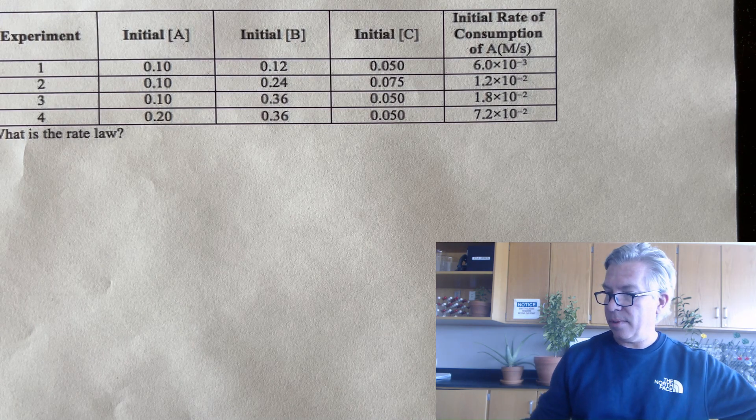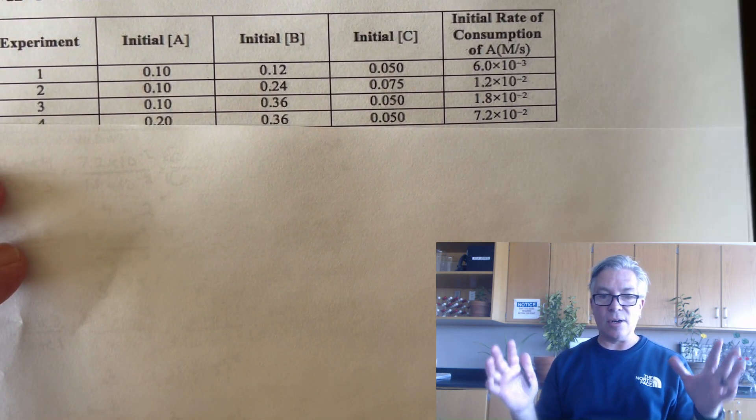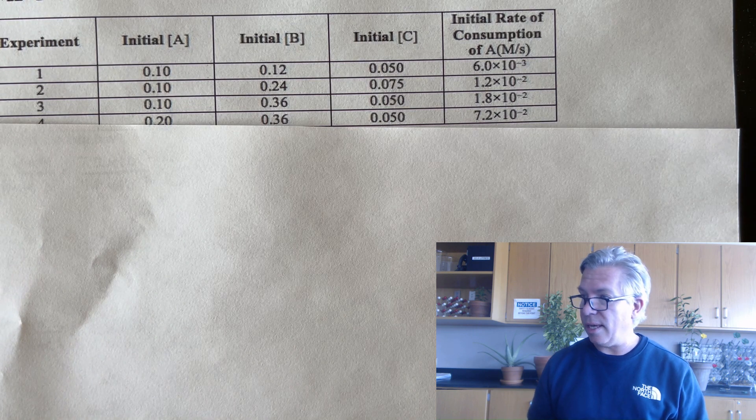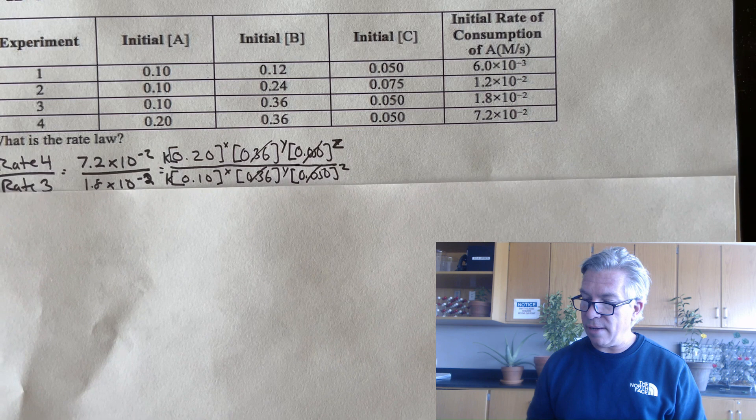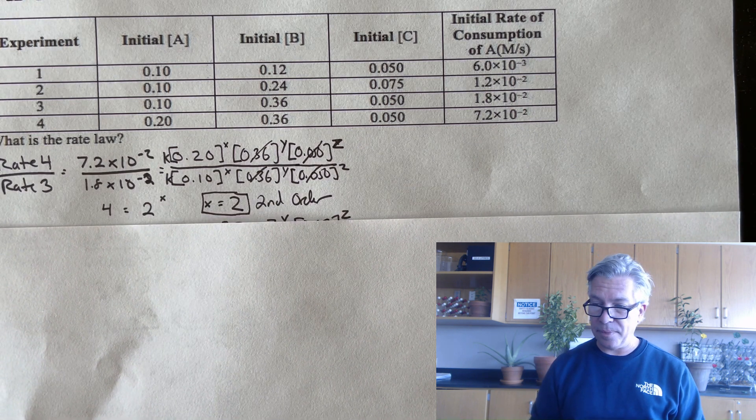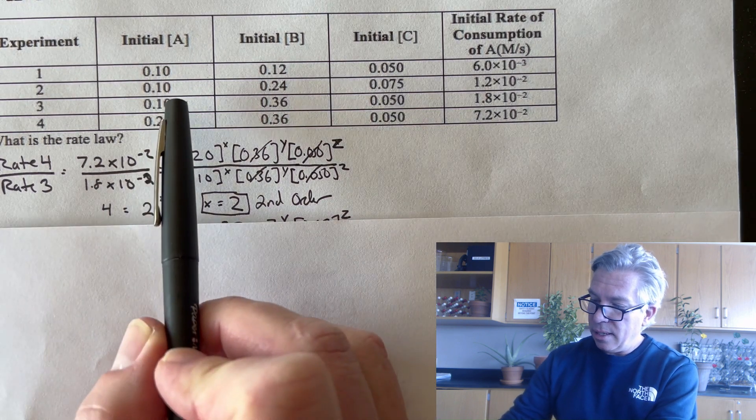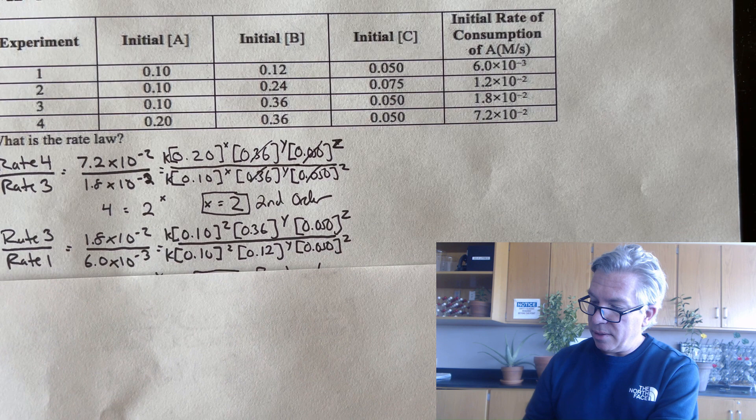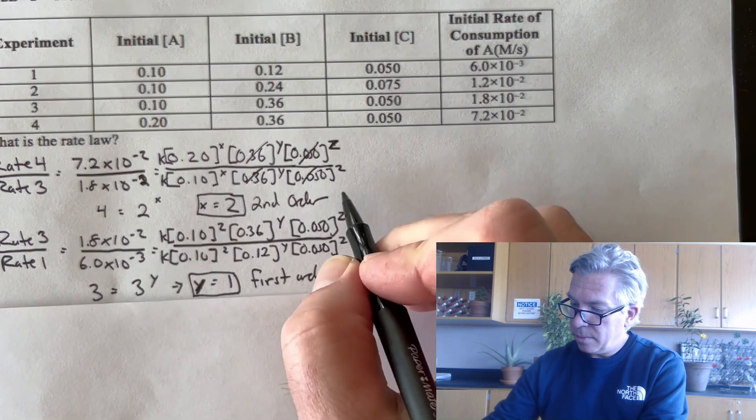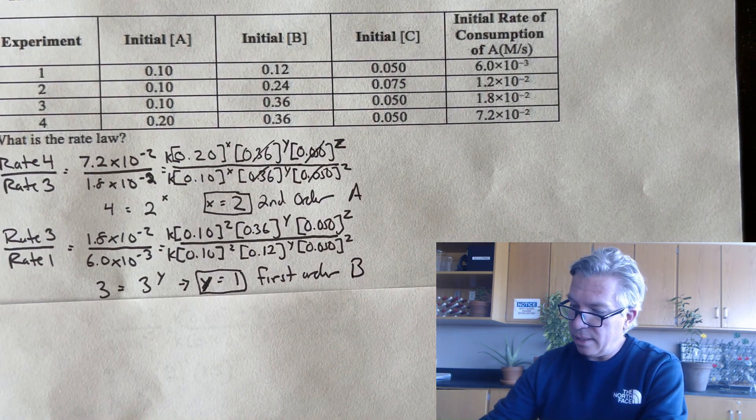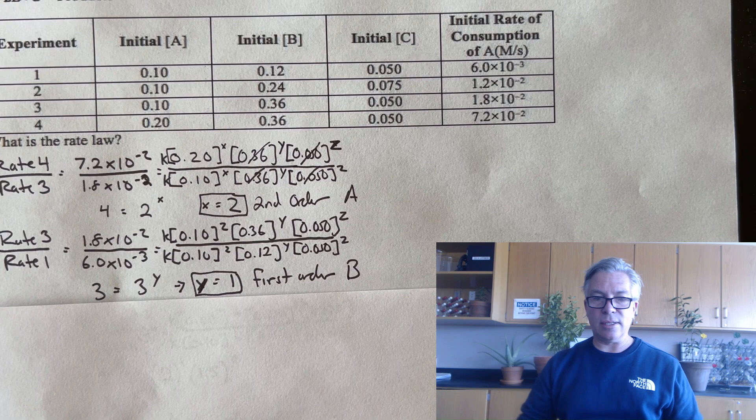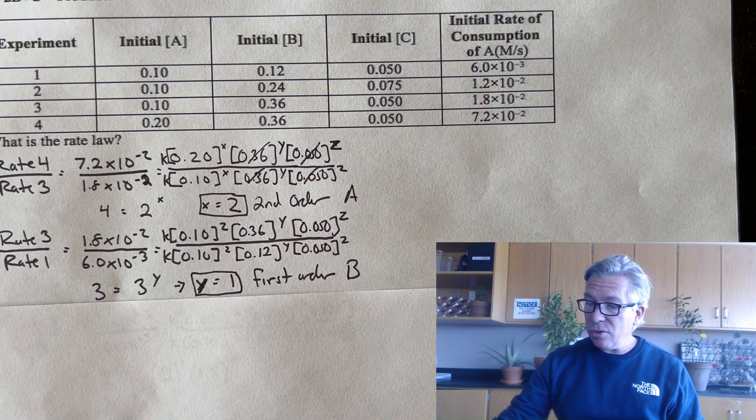All right. If you were able to do it, congratulations. Let's show you what I found. This one had a little bit of a wrinkle. If you got to this point and said, oh my gosh, this is getting too complicated, that's fine. We're not judging. But if you were able to get it, congratulations. When I worked out this solution, I found that A was second order. Comparing rate 4 to rate 3, it doubled, but the rate went up by 4. So that's second order. For B, I found it was first order. Comparing rate 3 over rate 1, which had this changing by a factor of 3, the rate went up by a factor of 3. That's great.